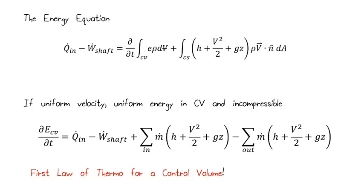dE in the control volume dt equals Q dot N minus the shaft work out plus the mass flow rate times H plus V squared over 2 plus GZ over all the inlets minus the same sum over all the outlets. And you should recognize this as the first law of thermodynamics written for a control volume. So you can see that this Reynolds transport theorem and the first law of thermodynamics are very closely related.